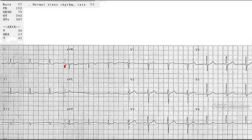The rate is 77 and there are P waves in front of every QRS, very easy to see here in lead one, but they're also present in every lead. If they're present in one lead, they're present in all of them. So P waves are present, it's a regular rhythm, and the rate is 77 — we have normal sinus rhythm.